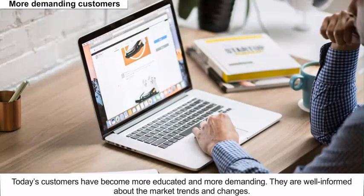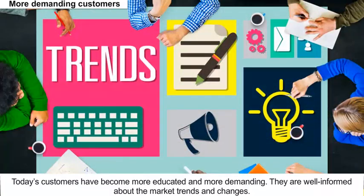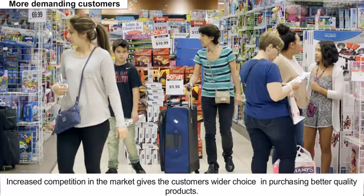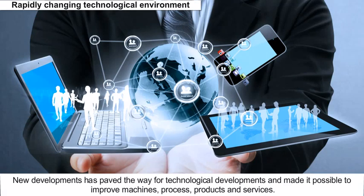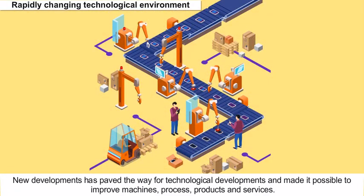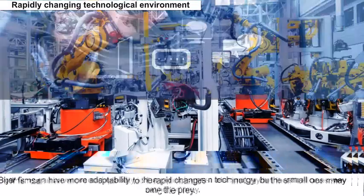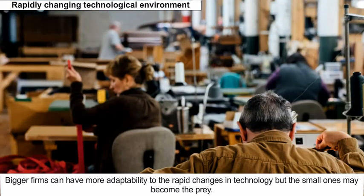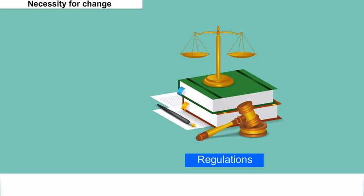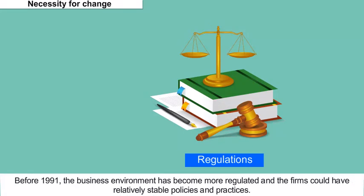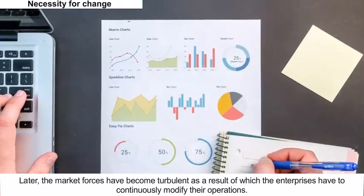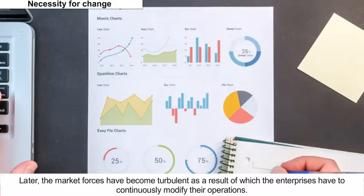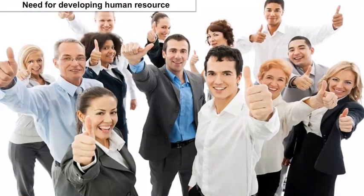Today's customers have become more educated and more demanding. They are well informed about market trends and changes, and increased competition in the market gives customers a wider choice in purchasing better quality products. New developments have paved the way for technological advancements, making it possible to improve machines, processes, products and services. Bigger firms can adapt more readily to rapid changes in technology, but smaller ones may become vulnerable. Before 1991, the business environment was more regulated, allowing firms to have relatively stable policies and practices, but later market forces became turbulent, requiring enterprises to continuously modify their operations.